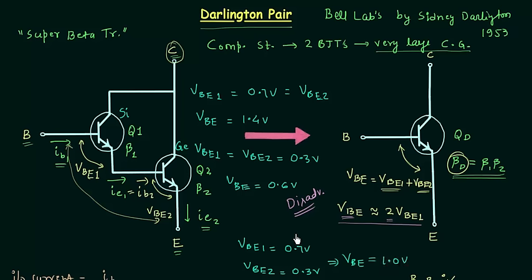So this is all for this lecture. In the next lecture I will explain the practical application of the Darlington pair. We will use a breadboard, LED, resistor, voltage source, and two NPN transistors to construct a circuit depicting the practical application of the Darlington pair. If you have any doubt in this lecture you may ask in the comment section.